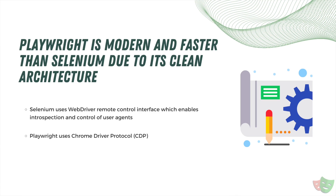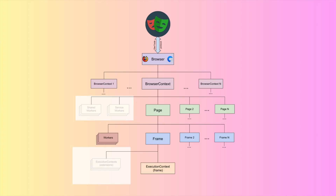The first important feature of Playwright compared to Selenium is its speed. Because Playwright is modern, it is also much faster than Selenium due to its clean architecture. Selenium uses the WebDriver remote control interface which enables introspection and control of the user agent, but Playwright uses the modern Chrome DevTools Protocol which is much faster than Selenium's WebDriver interface.